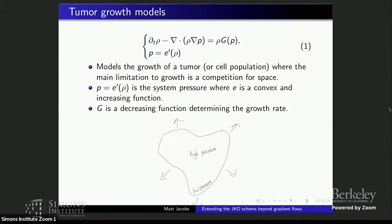I'm going to focus on just one particular model today, but in fact there's actually a lot of different places where you can do this. The model I'm going to look at are these tumor growth models, where ρ is modeling the density of some tumor — we look at all the cells, average them and zoom out. That's our density.